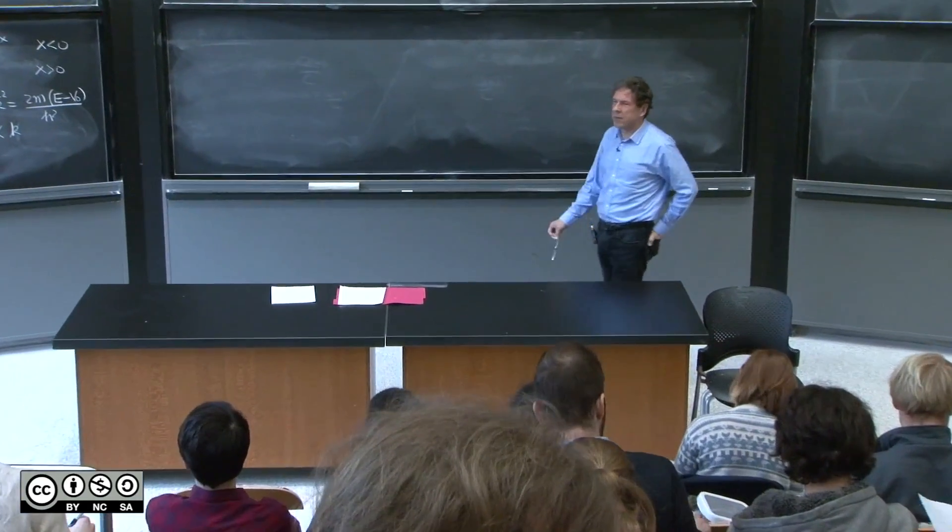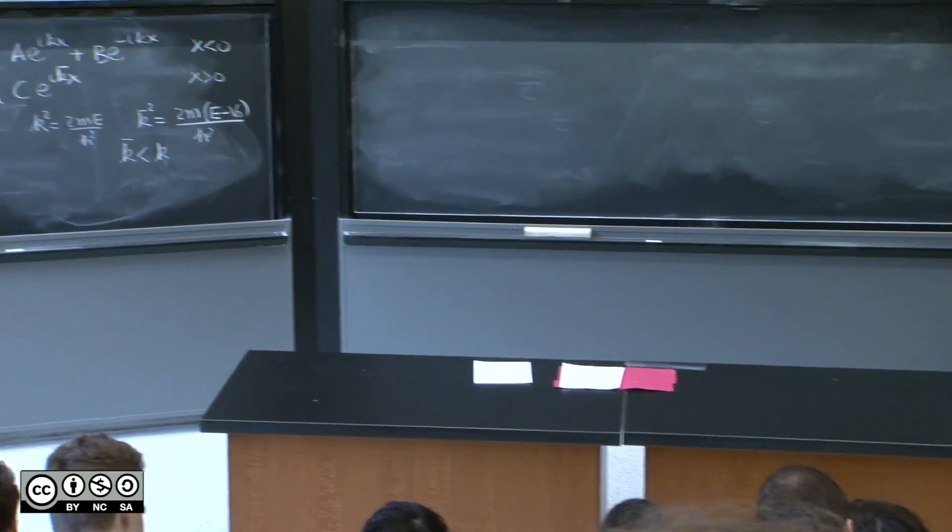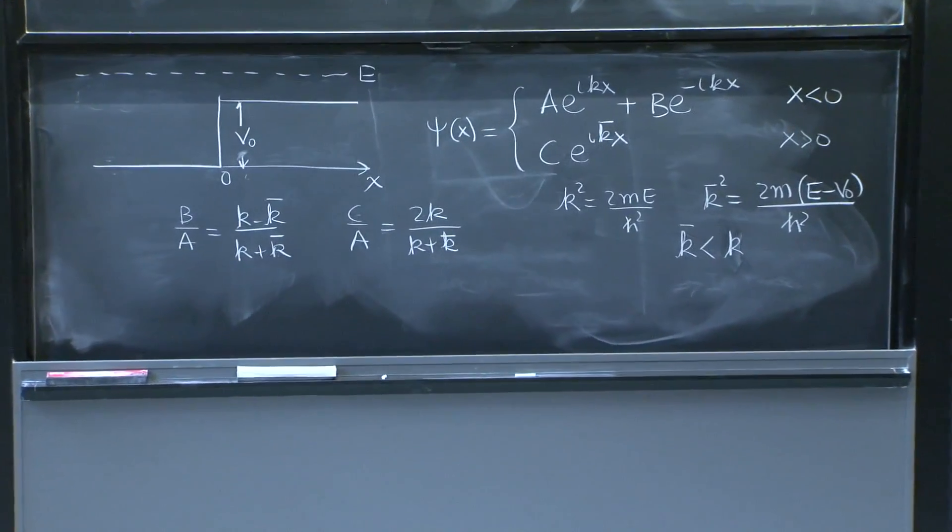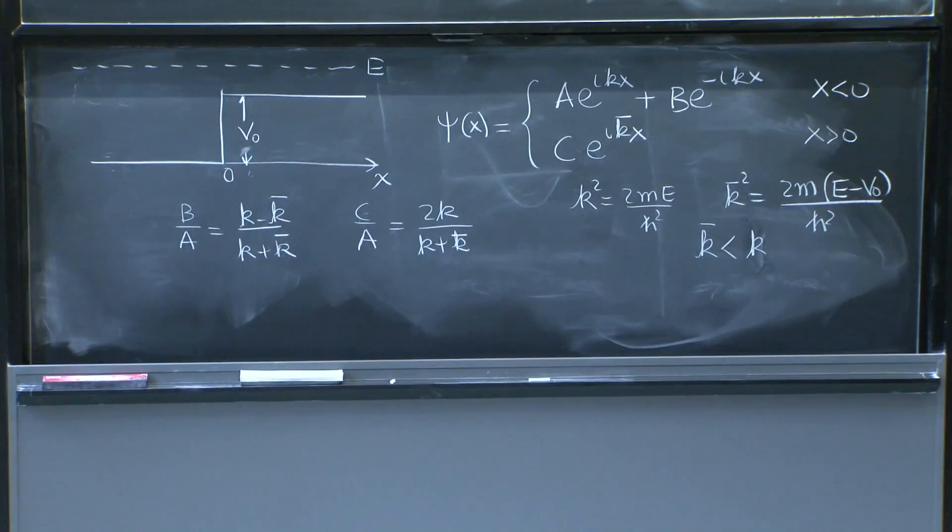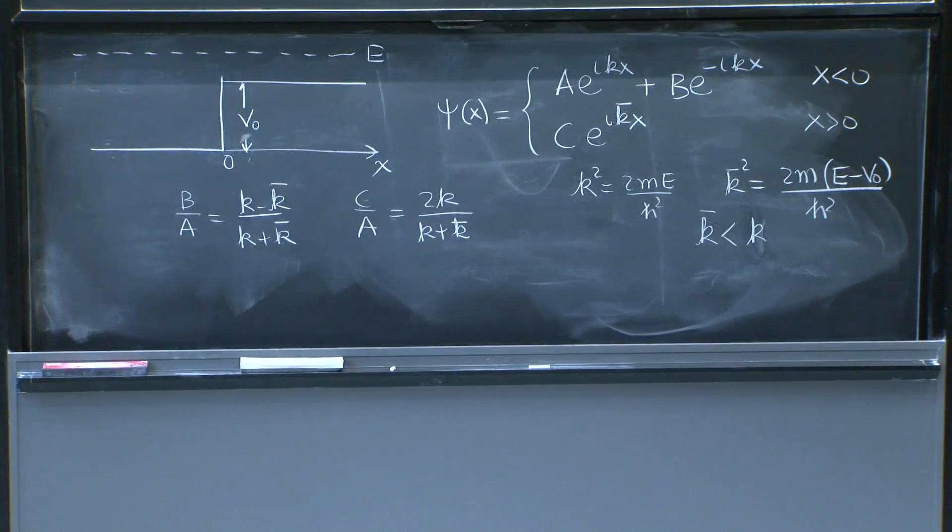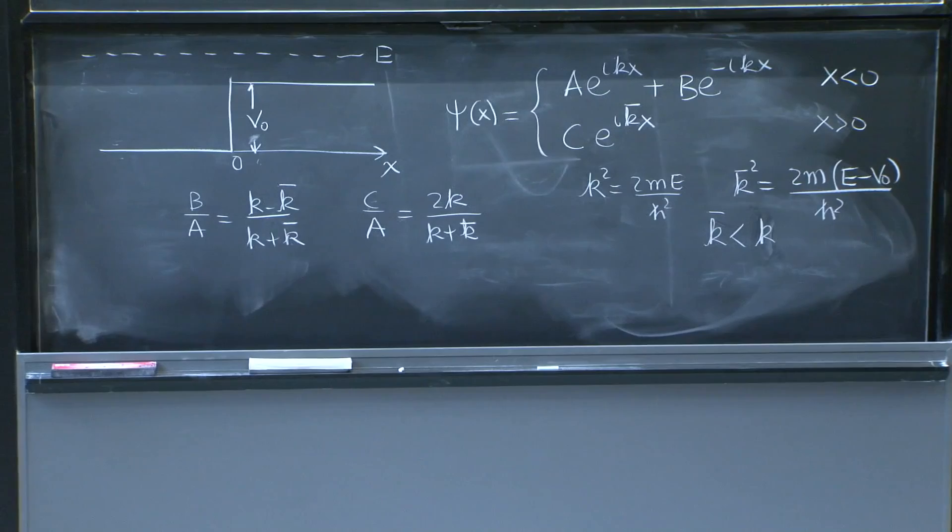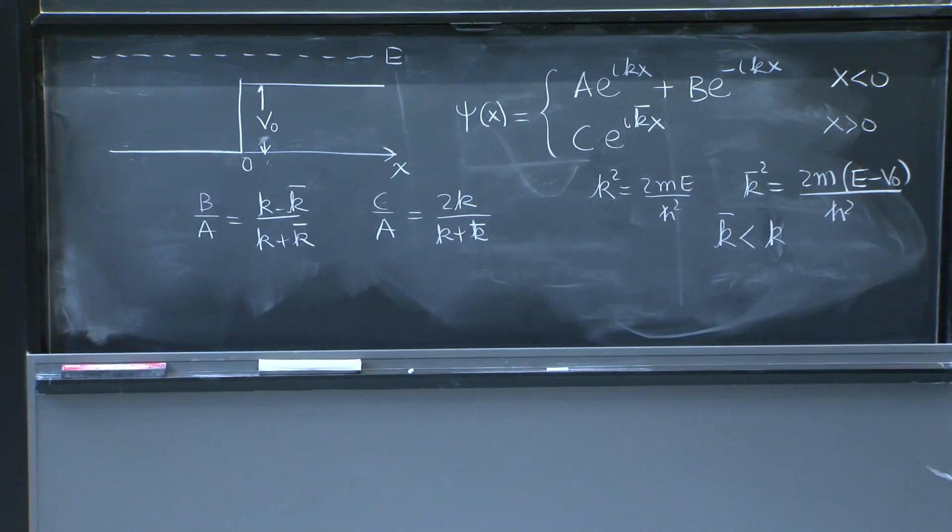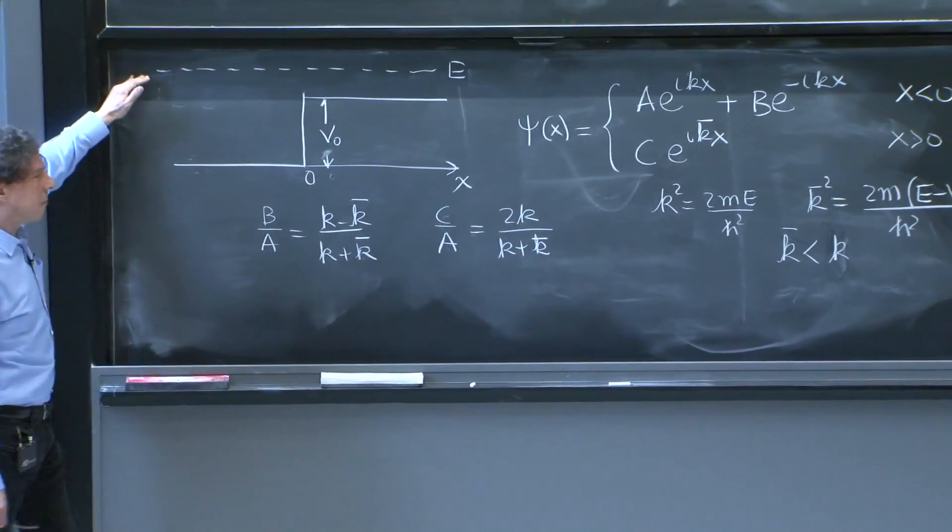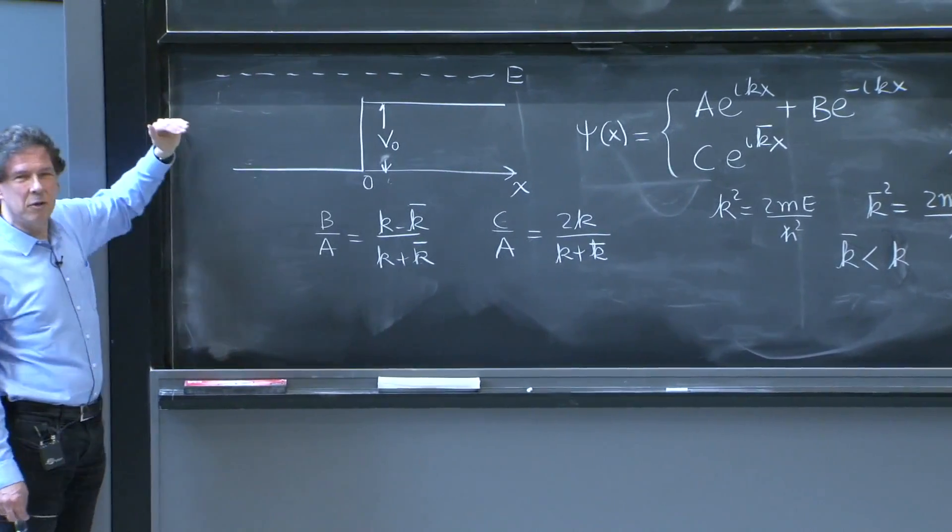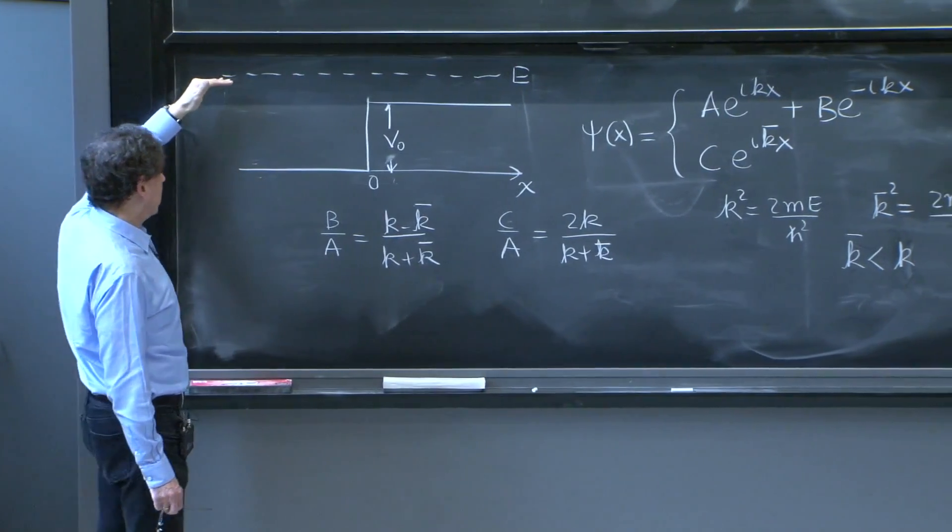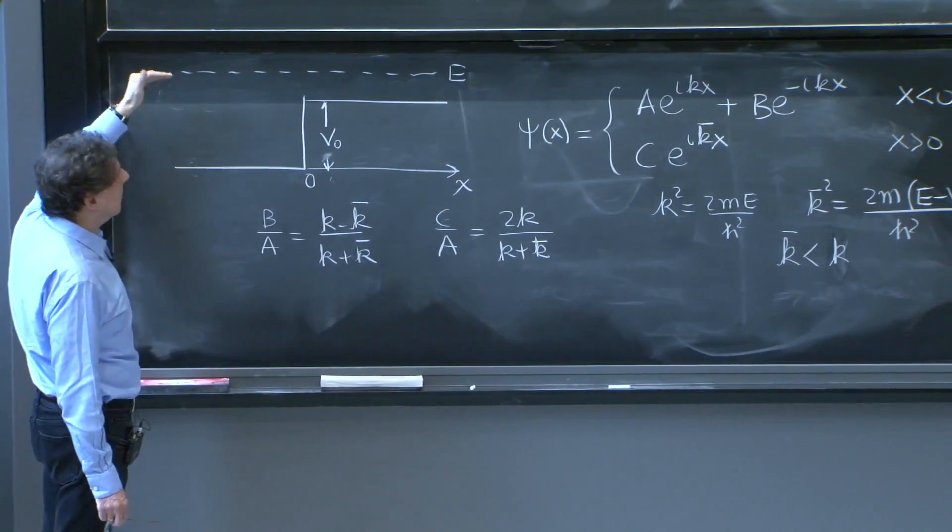I've put on the blackboard here the things we were doing last time. We began our study of stationary states that are not normalizable. These are scattering states. Momentum eigenstates were not normalizable, but now we have more interesting states that represent the solutions of the Schrödinger equation that are stationary states with some energy E.